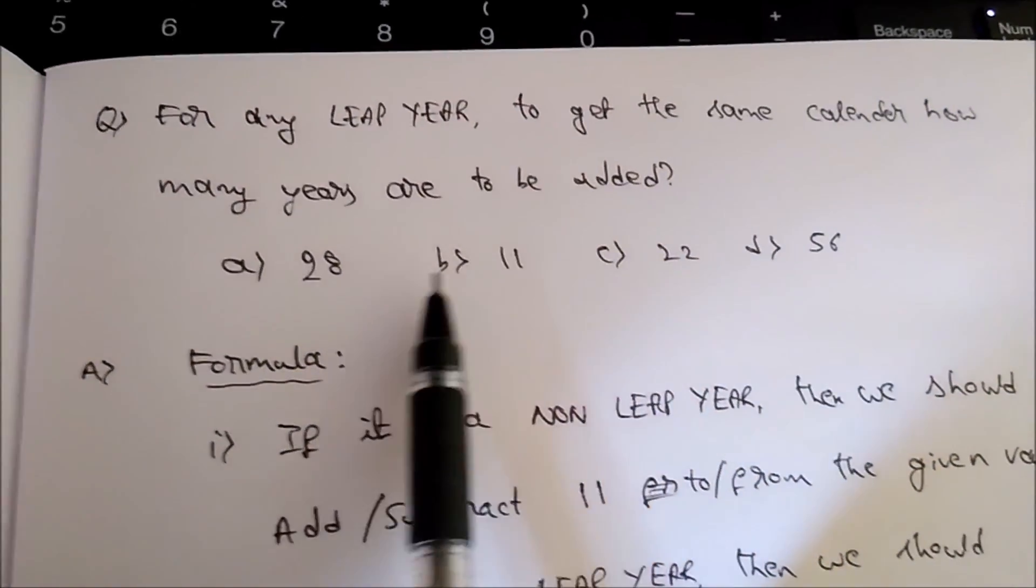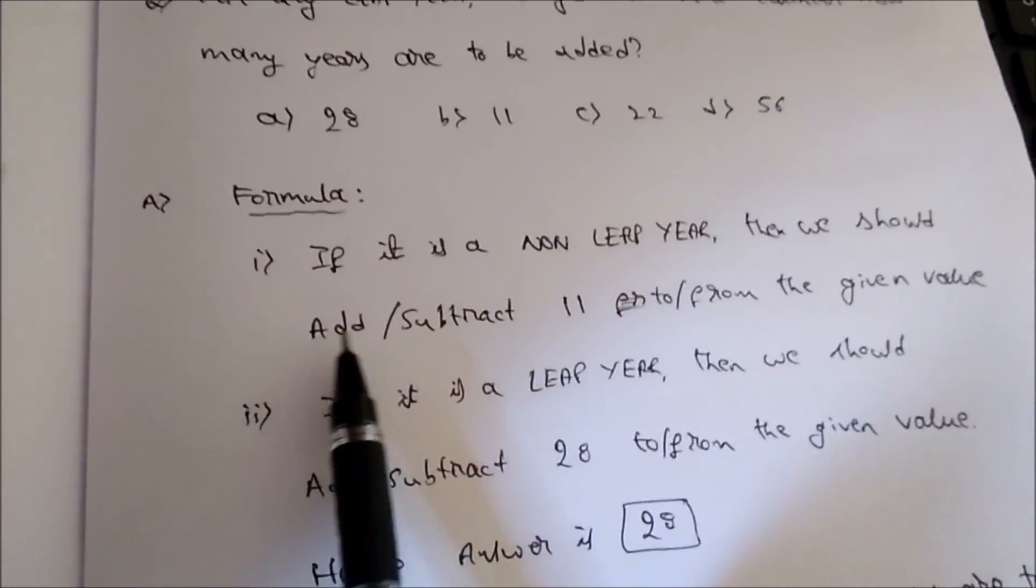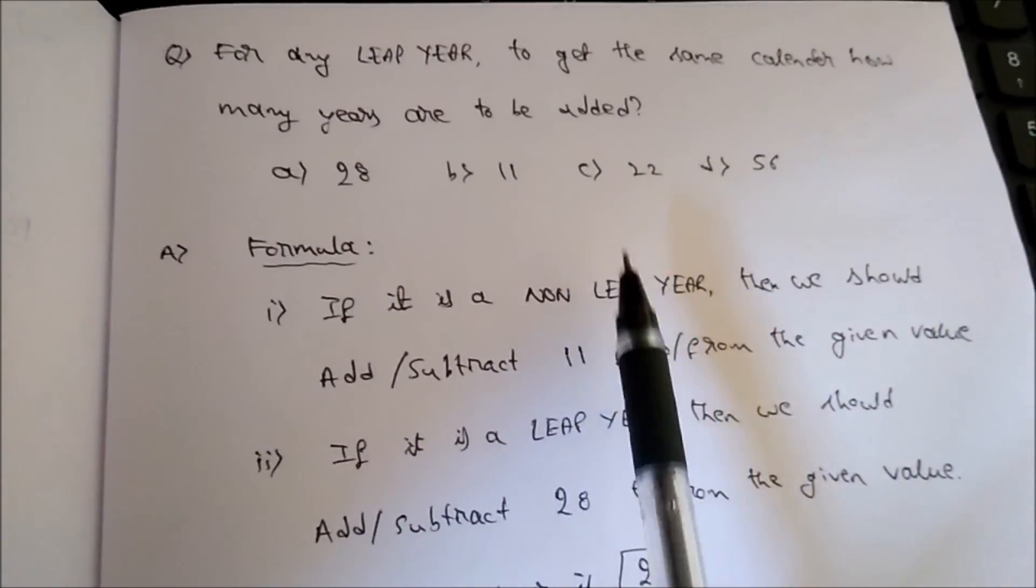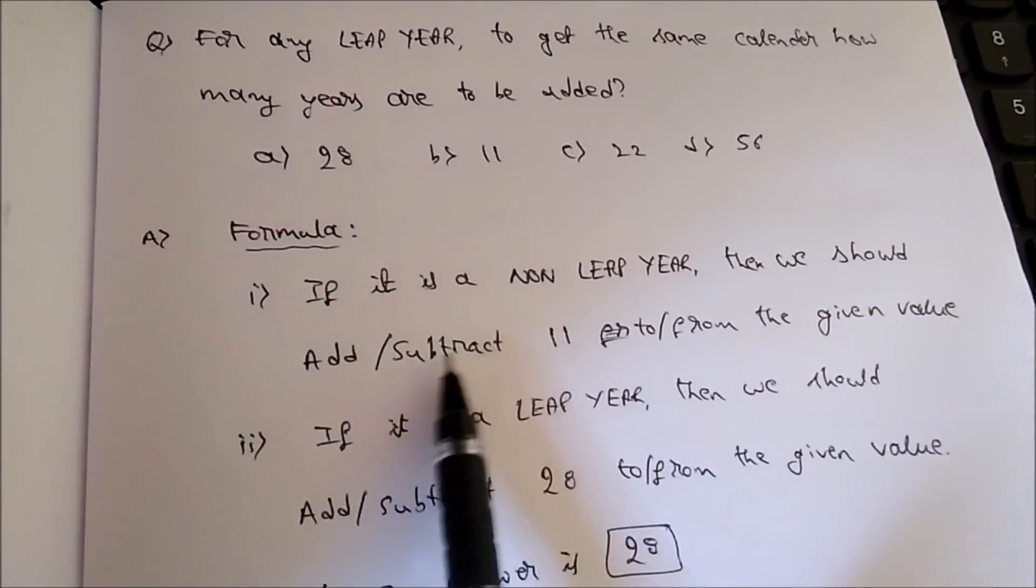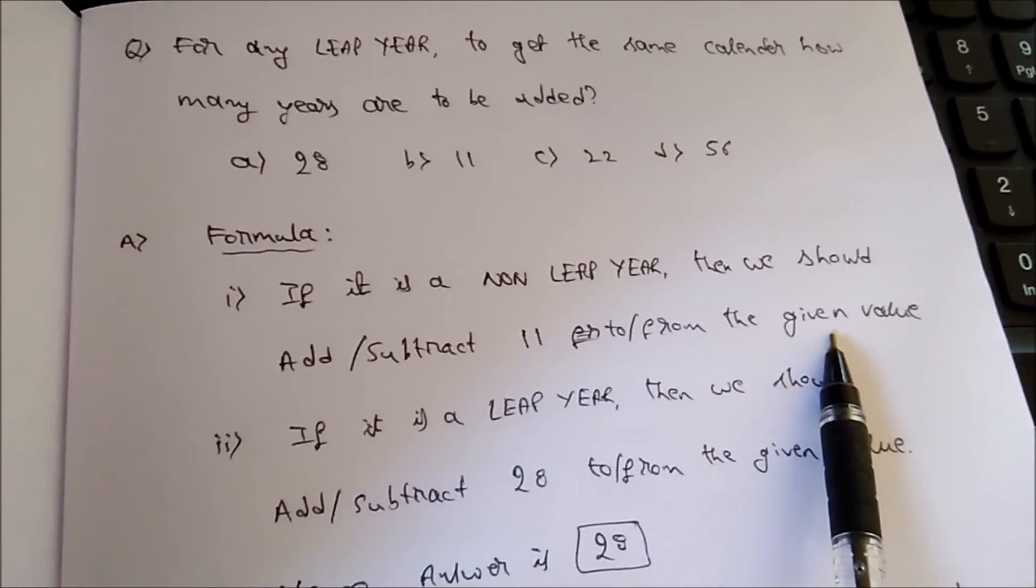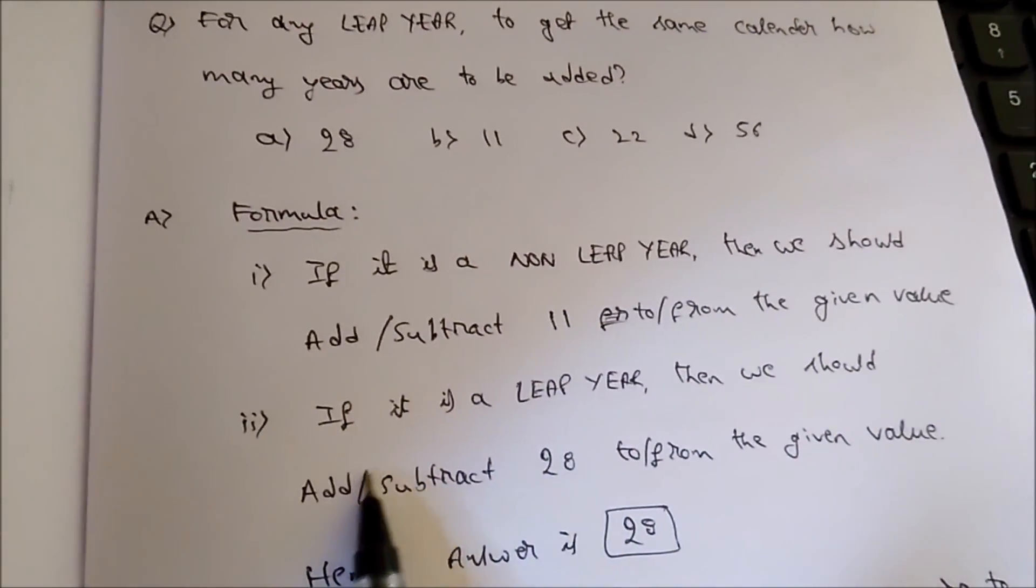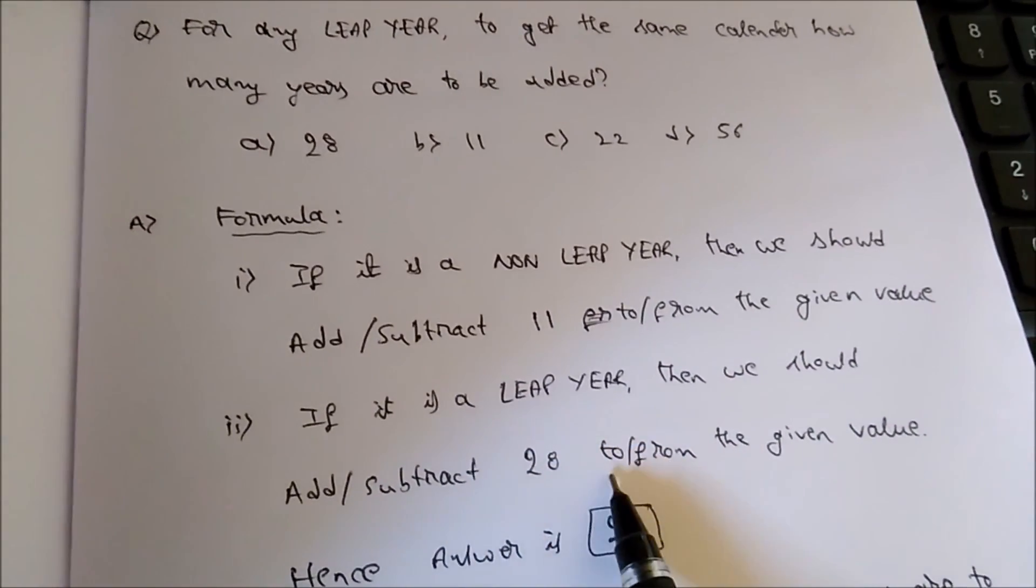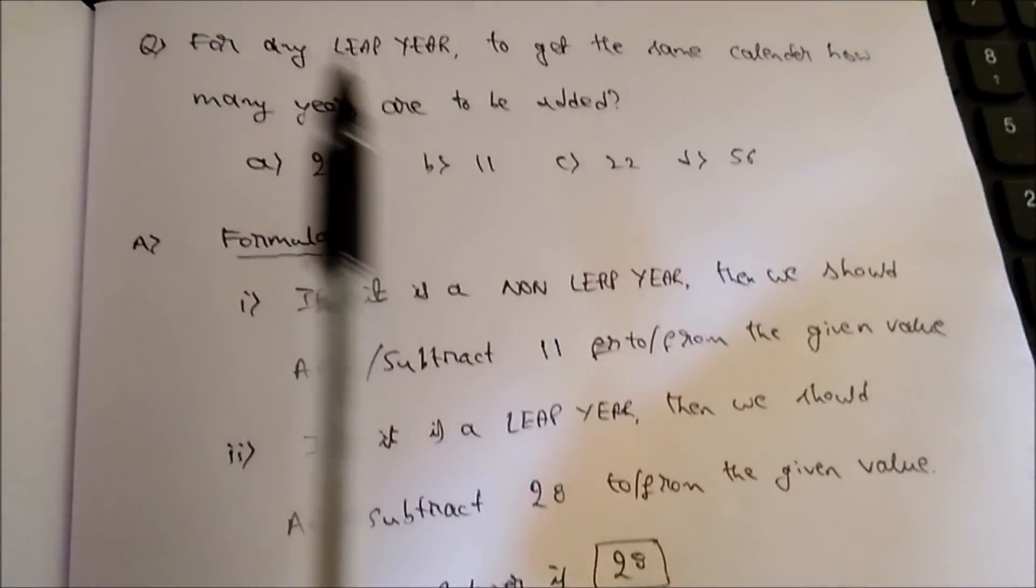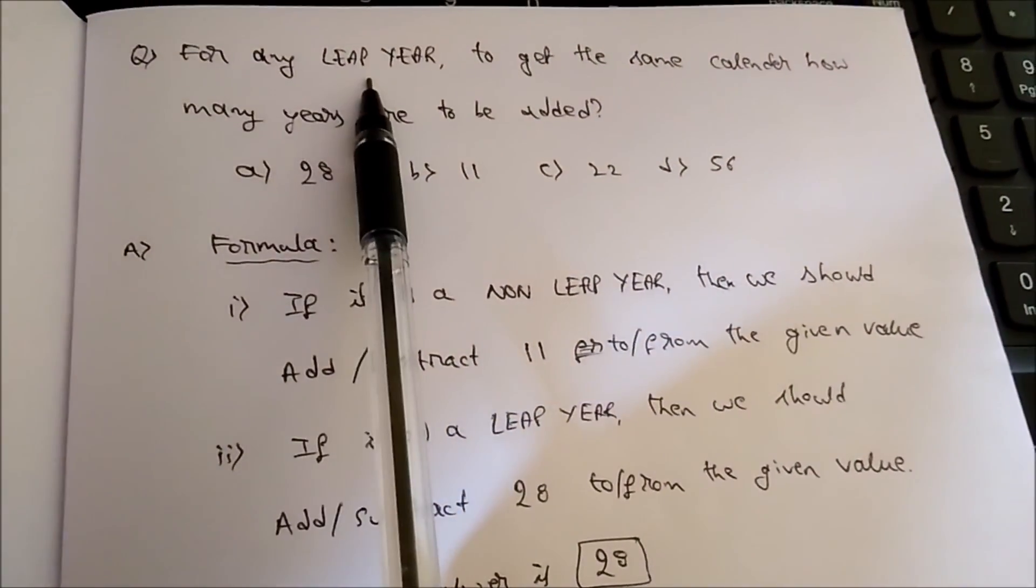There is a standard formula for this. If it is a non-leap year, then we should add or subtract 11 from the given value. If the given value is a leap year, then we should add or subtract 28 to or from the given value.